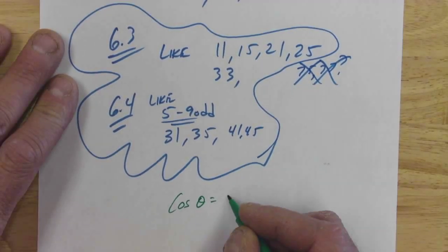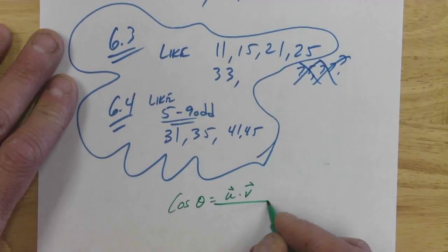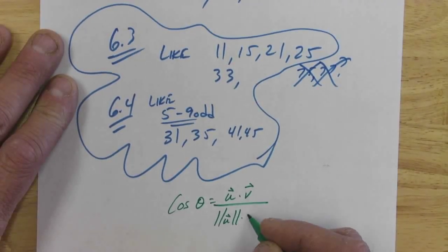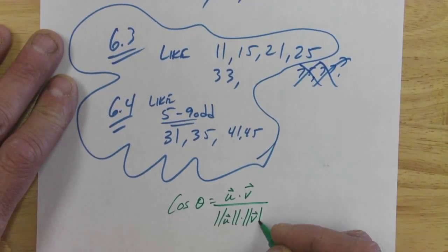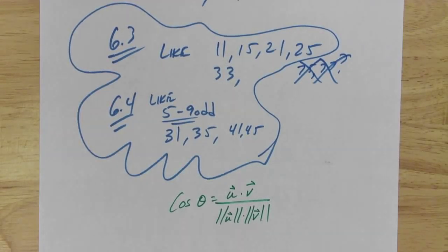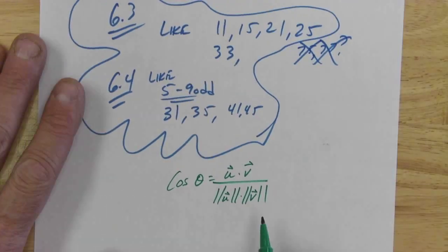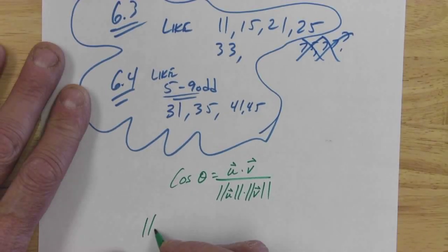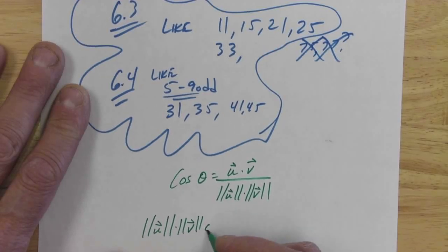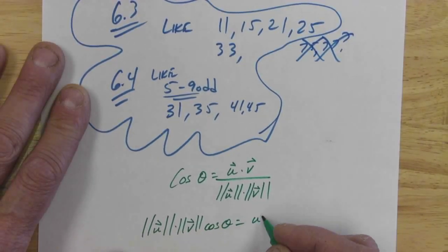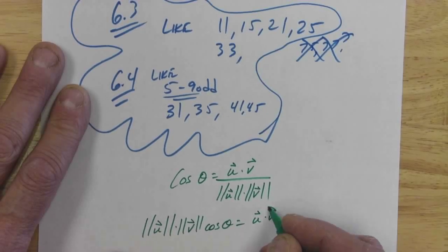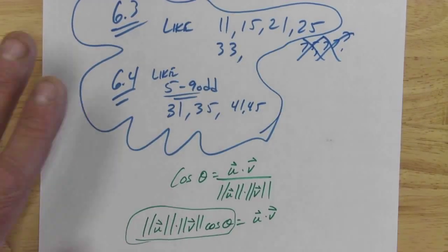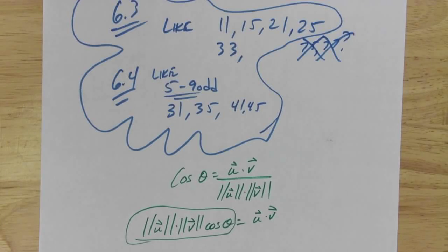Cosine theta equals u dot v over the magnitude of u times the magnitude of v. Okay, and like we said yesterday, that comes from the law of cosines. And you can actually see that if I would just back this up one step, you can see that this part right here, that's law of cosines. Now granted it's